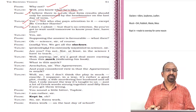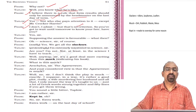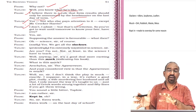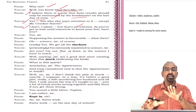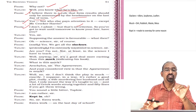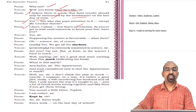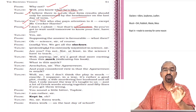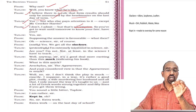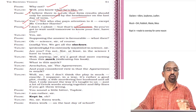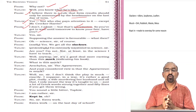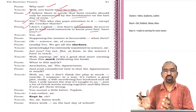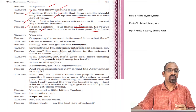Taplow says, 'Well, anyway, sir, it is a good deal more exciting than this muck,' indicating his book. Muck means dirt, rubbish, or something unpleasant. Frank asks in the child's own language, 'What is this muck?' Taplow says, 'Aeschylus, sir — the Agamemnon.' It is actually Robert Browning's version of Aeschylus' Agamemnon, the Greek classical tragedy. Frank asks, 'And your considered view is that the Agamemnon is muck?'